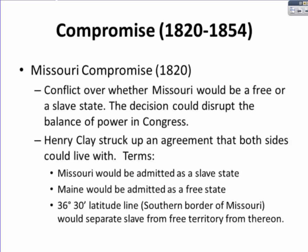In 1820, prior to a lot of Western expansion and prior to the presidency of James K. Polk and Manifest Destiny, the Missouri Compromise addressed whether Missouri would enter the Union as a slave state or a free state. The decision could disrupt the balance of power in Congress, because prior to the Missouri Compromise there were an equal number of slave states and free states. Therefore, power in the Senate specifically was equal because of equal representation.